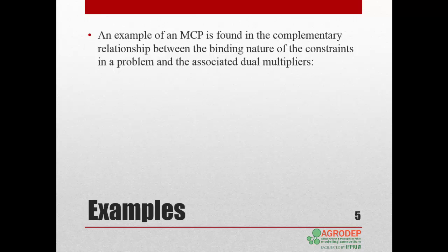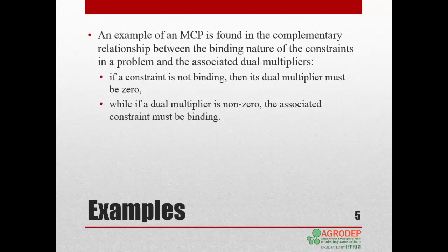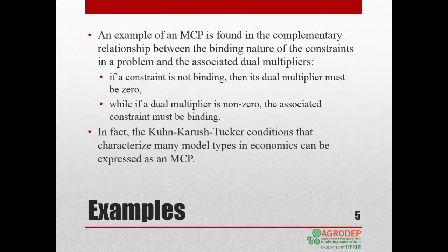A familiar example of MCP can be found in the complementary relationship between the binding nature of constraints and the associated dual multipliers. If a constraint is not binding, then its dual multiplier must be zero at bound. If a dual multiplier is non-zero, the associated constraint must be binding. In fact, the Karush-Kuhn-Tucker conditions — theoretical conditions that characterize many model types in economics, especially in the general equilibrium class — can be expressed as an MCP. We will illustrate with examples in the following slides.